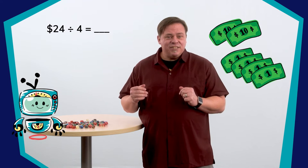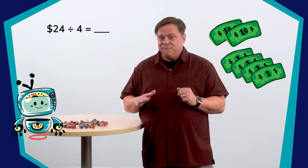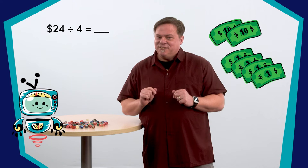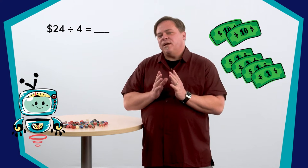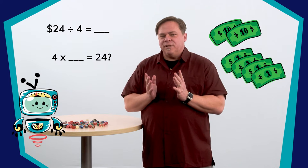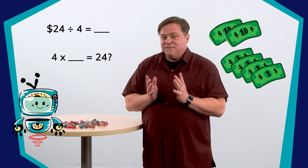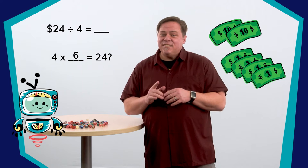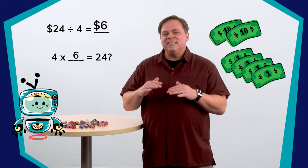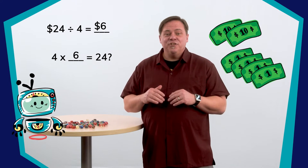In this case, you're trying to find the quotient. You could use multiplication to solve this problem. Ask yourself, four times what equals twenty-four? Do you have an answer? Sure. Four times six equals twenty-four. If this is a fact you know, then it will be in your head already. You each pocket six dollars, and you're done.